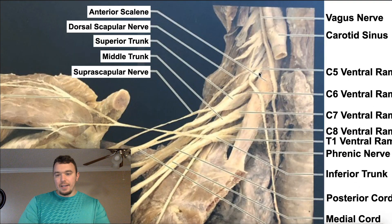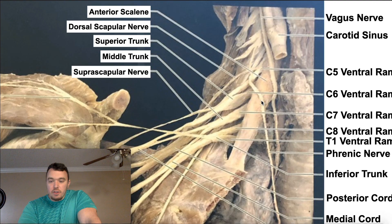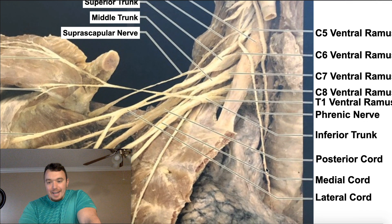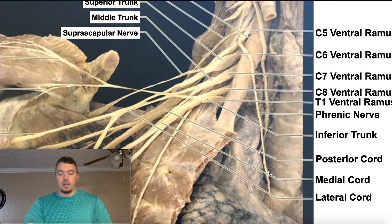This nerve right here, if you follow it, seems to come off of the C5 ventral ramus and go lateral to the vagus nerve. This nerve is the right phrenic nerve. It's going to descend down anterior to the trachea. Notice that the vagus nerve ends up going more or less behind it, whereas the phrenic nerve stays anterior to the trachea, descending down to the thoracic diaphragm, which is the muscle it innervates.